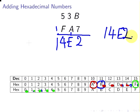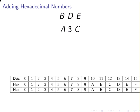So one more to finish off. B, D, E plus A, 3, C. Let's add those two all together. So we're going to start with E. And you can see there that C is 12. So we're going to count out 12. 1, 2, 3, 4, 5, 6, 7, 8, 9, 10, 11, 12. So that one is A. Carry the 1.